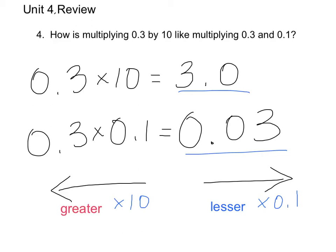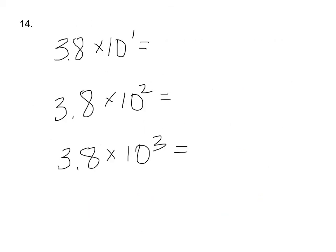Okay, well, let's try something. Here we have some decimals with some exponent numbers. And what it looks like we are doing is noticing and being able to follow some patterns. So we've got 3.8 times 10 to the power of 1, 3.8 times 10 to the power of 2, 3.8 times 10 to the power of 3.